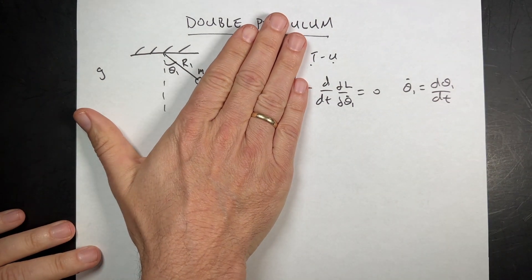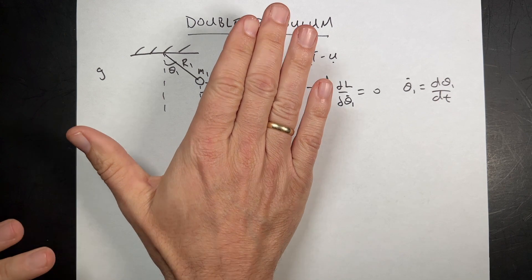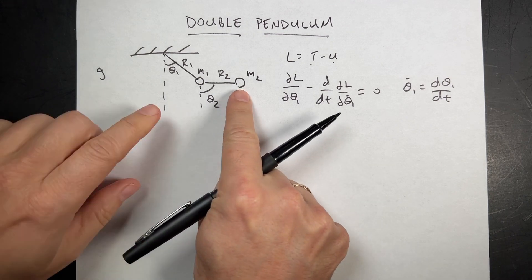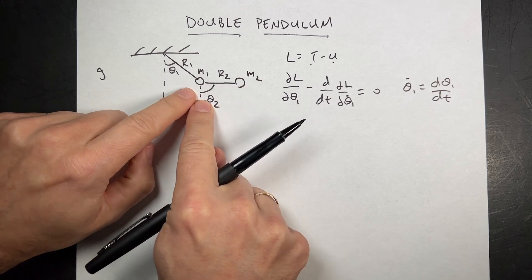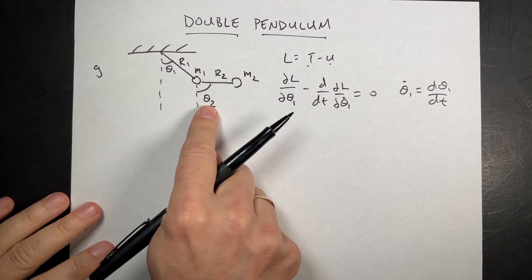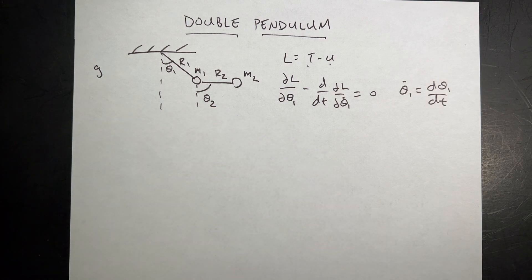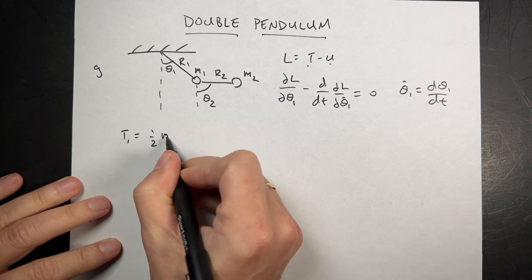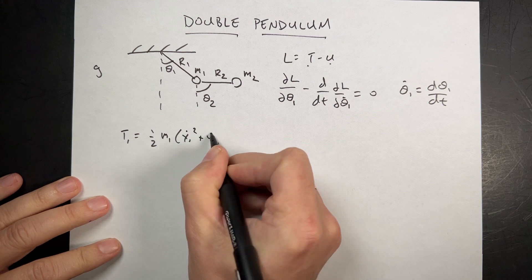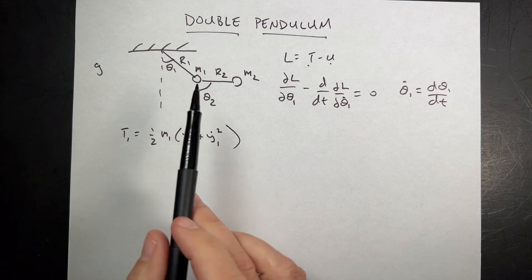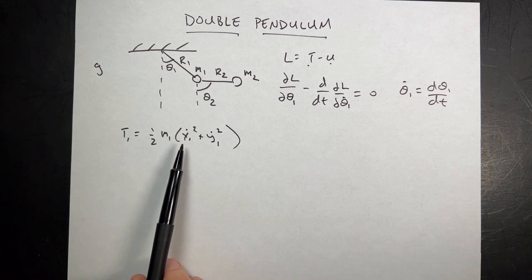For a simple pendulum you could use your intuition to get kinetic energy as one-half I omega squared, where omega squared would be theta 1 dot squared. But what about this second mass? Its position is defined relative to mass 1, which is really what makes Lagrangian mechanics so powerful. But you can't then say what the kinetic energy is in terms of theta 2 directly. The answer is almost always to write the kinetic energy in Cartesian coordinates. T1 is going to be one-half M1 times x1 dot squared plus y1 dot squared.